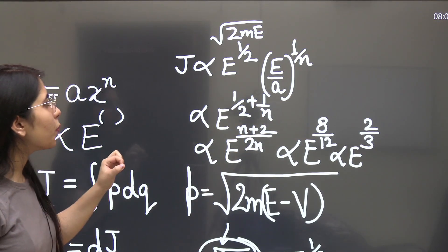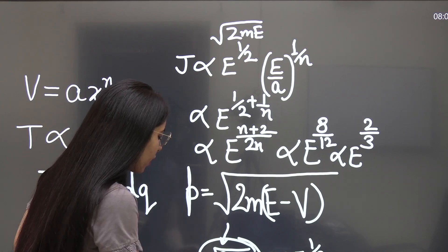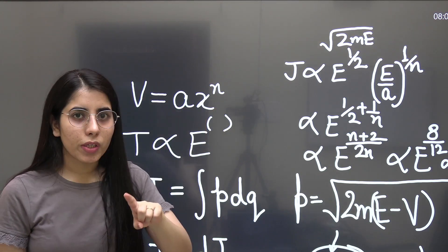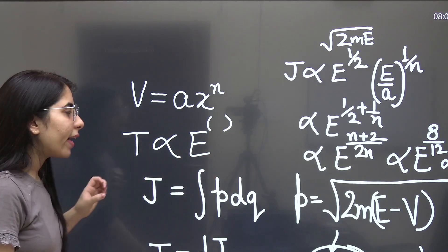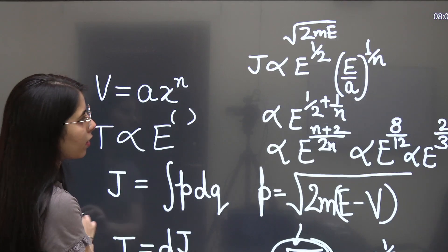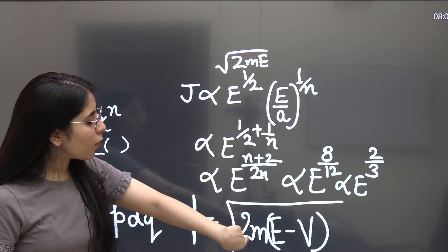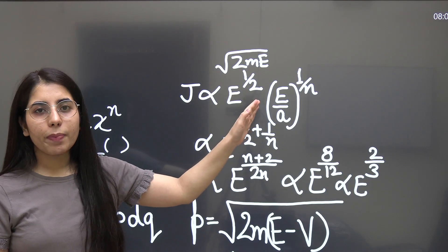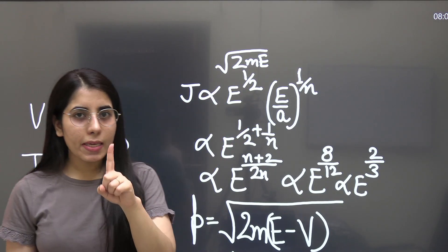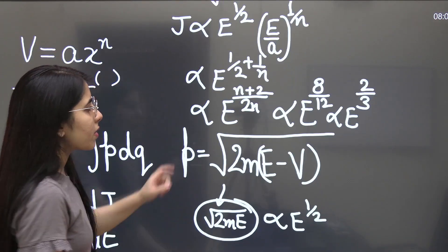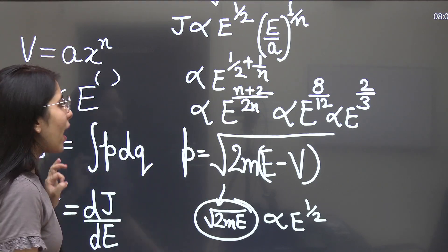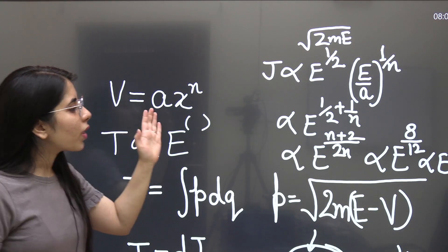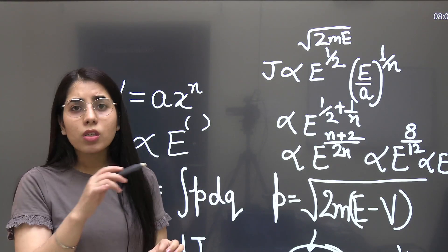What are the steps we have taken? I have taken a point x equal to b, but you can write x equal to c or anything. Where the potential energy equals the total energy, just write the value of that particular point and put it here. Also from the expression of momentum, you are just writing E to the power half, which is from the term root 2mE. This will give you the overall dependency of J on E. If you want to prepare one single expression, this is the final trick expression you can use: E to the power n plus 2 upon 2n, where n is the power of the potential dependency on x.